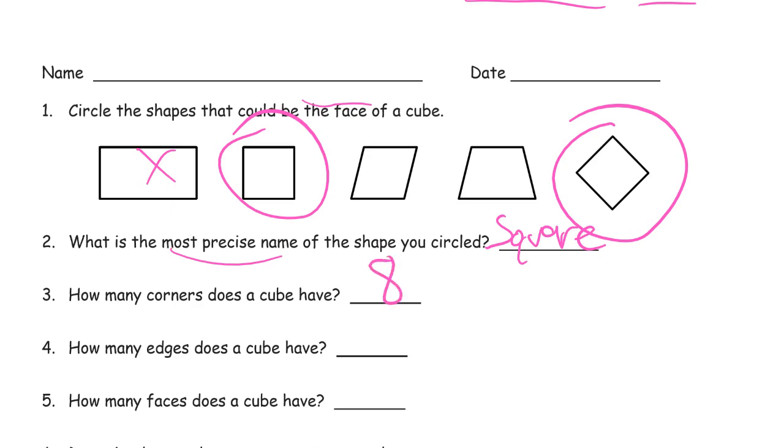How many edges does a cube have? Think about there's a square on the top. That's four edges. And a square on the bottom. That's four more, eight.